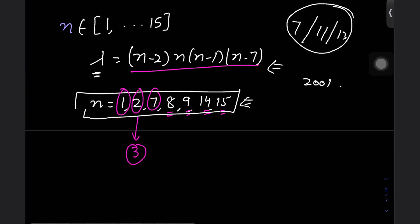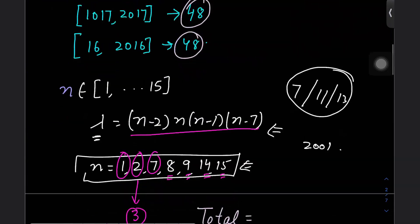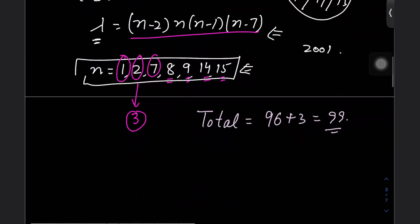So the total number of valid n from 1 to 2017 is 48 + 48 + 3 = 99. Hope you enjoyed this question. Please like the video and subscribe to the channel!